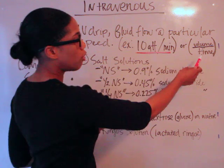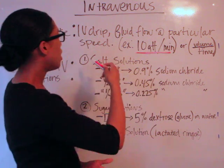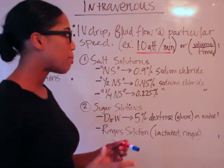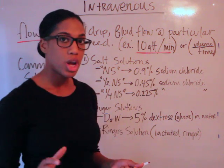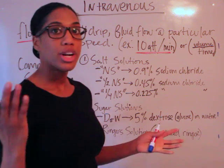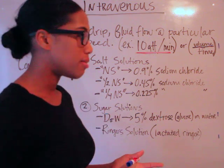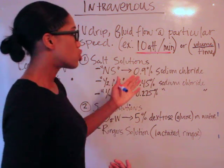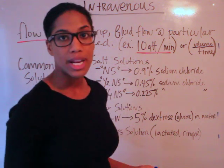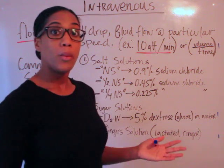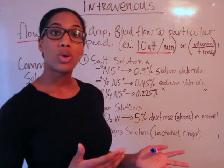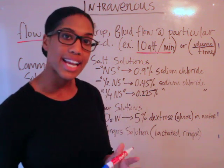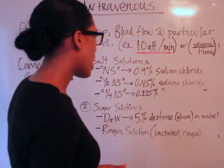You could also express flow rate as volume over time — any amount of volume over an amount of time. So you might say 20 drops per minute, or 60 drops per minute, which would also be equivalent to one drop per second.